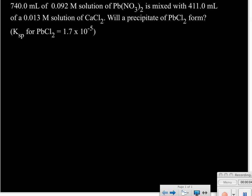The subject of this mini lecture is common ion problems. We're going to look at some solutions where we're mixing a couple of different solutions and trying to determine whether a precipitate will form. This is probably one of the more complicated types of Ksp problems. We have 740 milliliters of 0.92 molar lead(II) nitrate mixed with 411 milliliters of 0.013 molar calcium chloride, and we're asking whether a precipitate of lead(II) chloride will form. The Ksp for lead(II) chloride is 1.7 times 10 to the minus fifth.